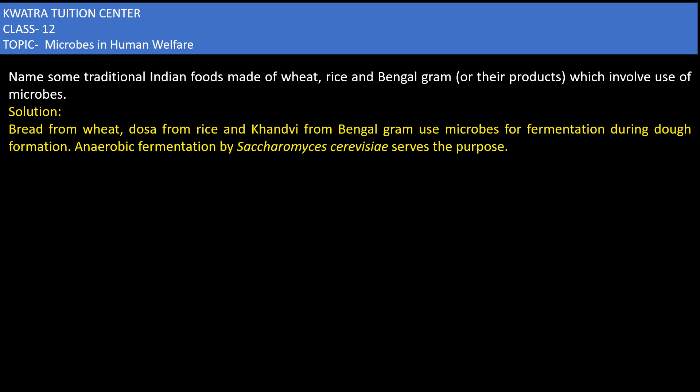If we talk about wheat, rice, and Bengal gram, some traditional Indian foods include dosa, which is made from rice and Bengal gram. These dishes use microbes for fermentation. For example, in making dosa, the batter mixture is left to ferment for some time, and with the help of microbes the texture becomes fluffy.